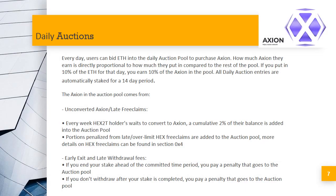The daily auction: putting tokens and value into your pocket. To get AXN, it needs to be claimed by HEX2T holders. The longer they wait to claim, the more penalties they face — about 2% of their total per week. This 2% is added into a daily auction pool where people can bid using ETH on the AXN tokens within it. If you bid 10% of the ETH on that day, you get 10% of the pool rewards. 80% of the ETH paid in the auction is then used to hyperdrive both the Axion token and the stakers' earnings. The ETH is used to purchase tokens, boosting the token price, and then those tokens are distributed to stakers, creating a very strong positive feedback loop.